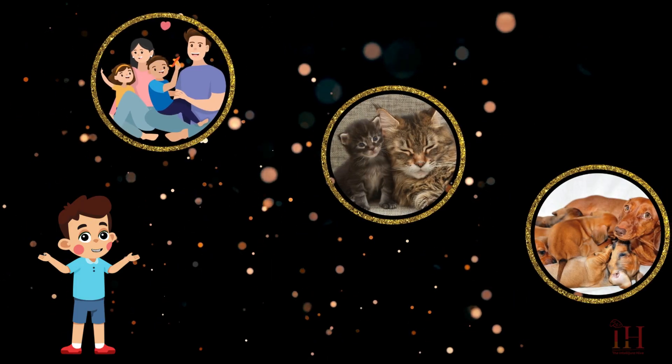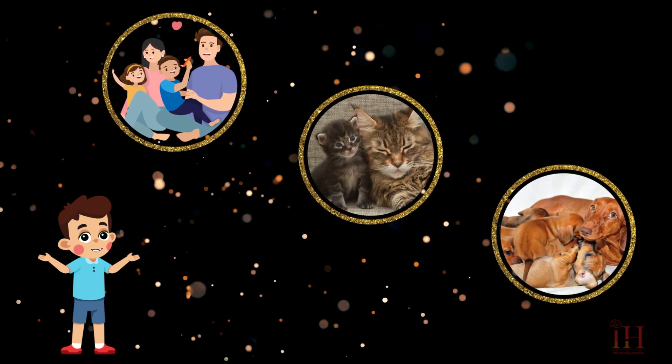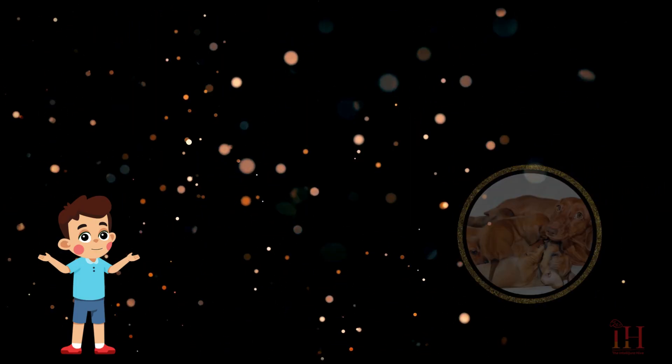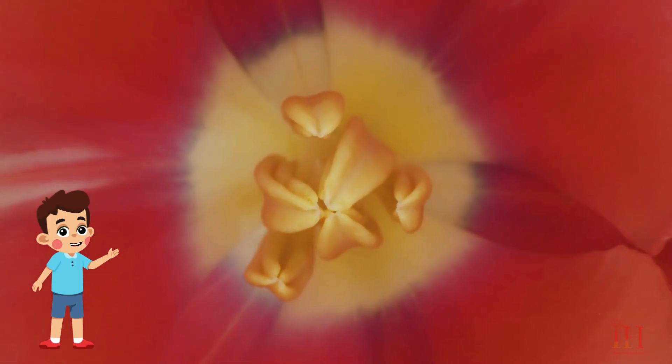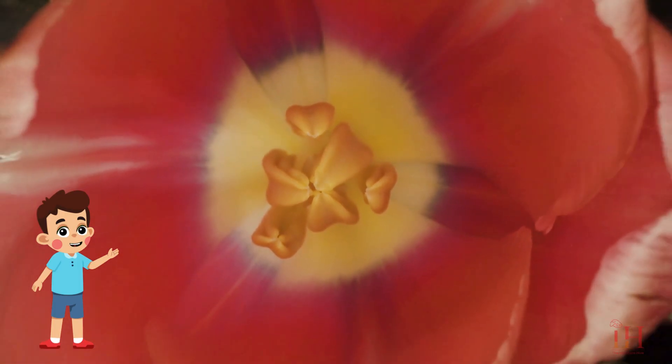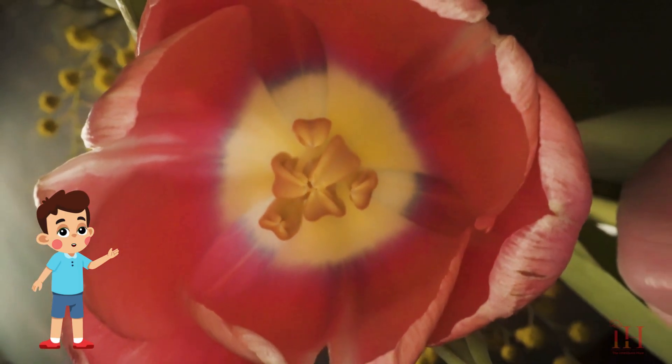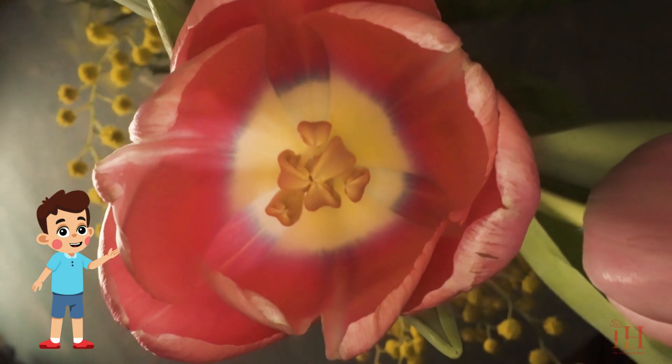Just like animals can have babies, plants can make new plants, too. This is called reproduction. Many plants grow flowers, which are not just pretty. They're super important. Inside a flower are special parts that help the plant make seeds.